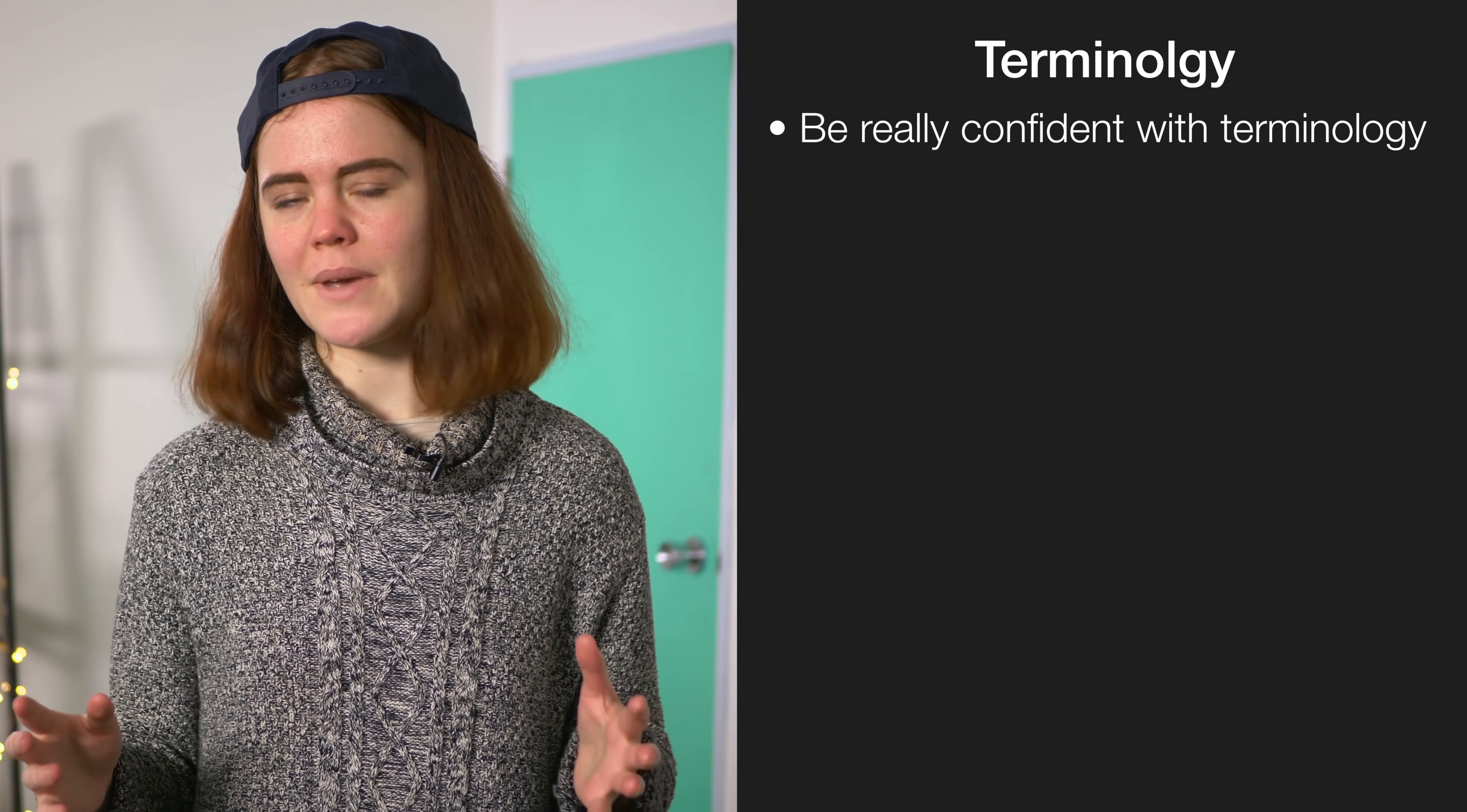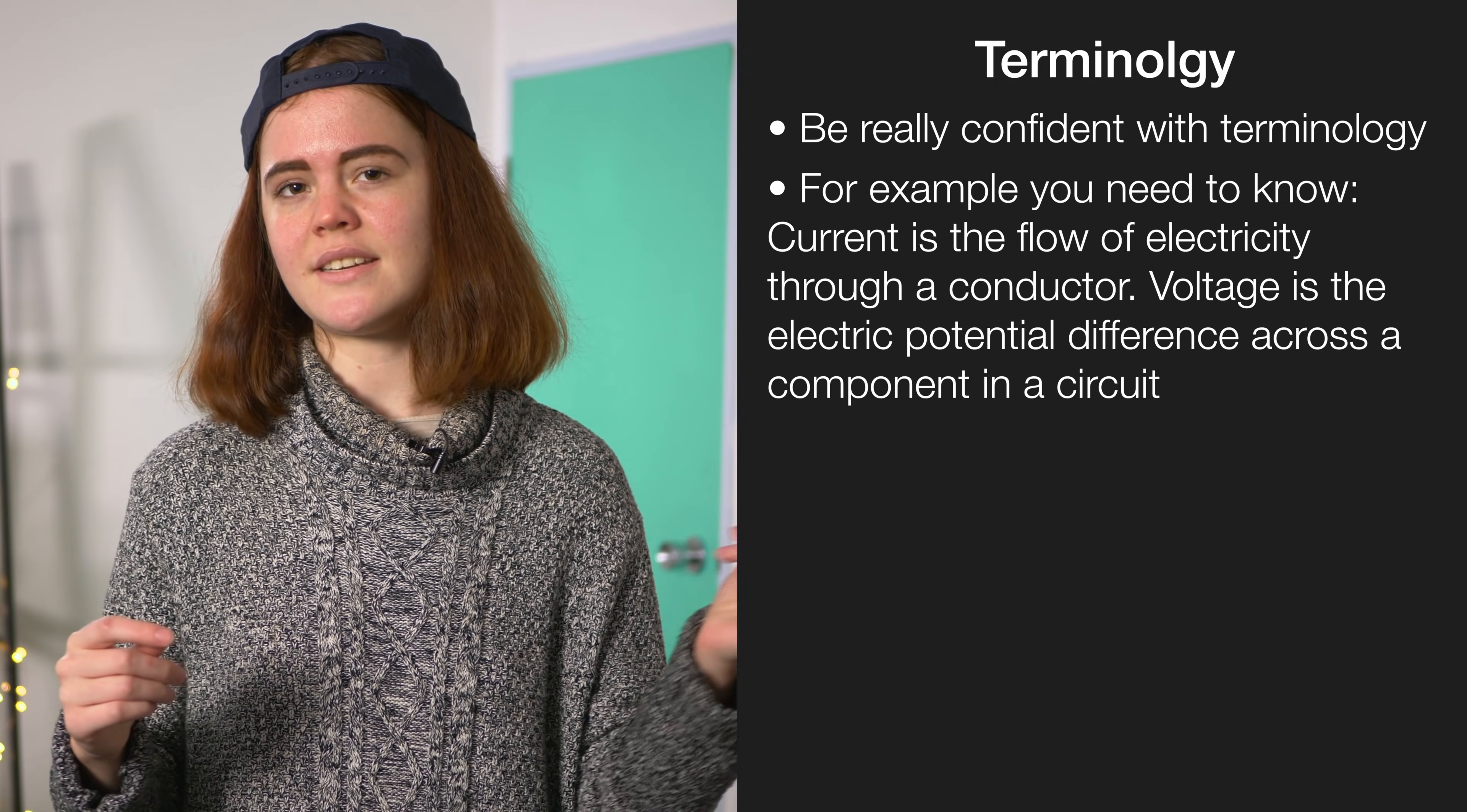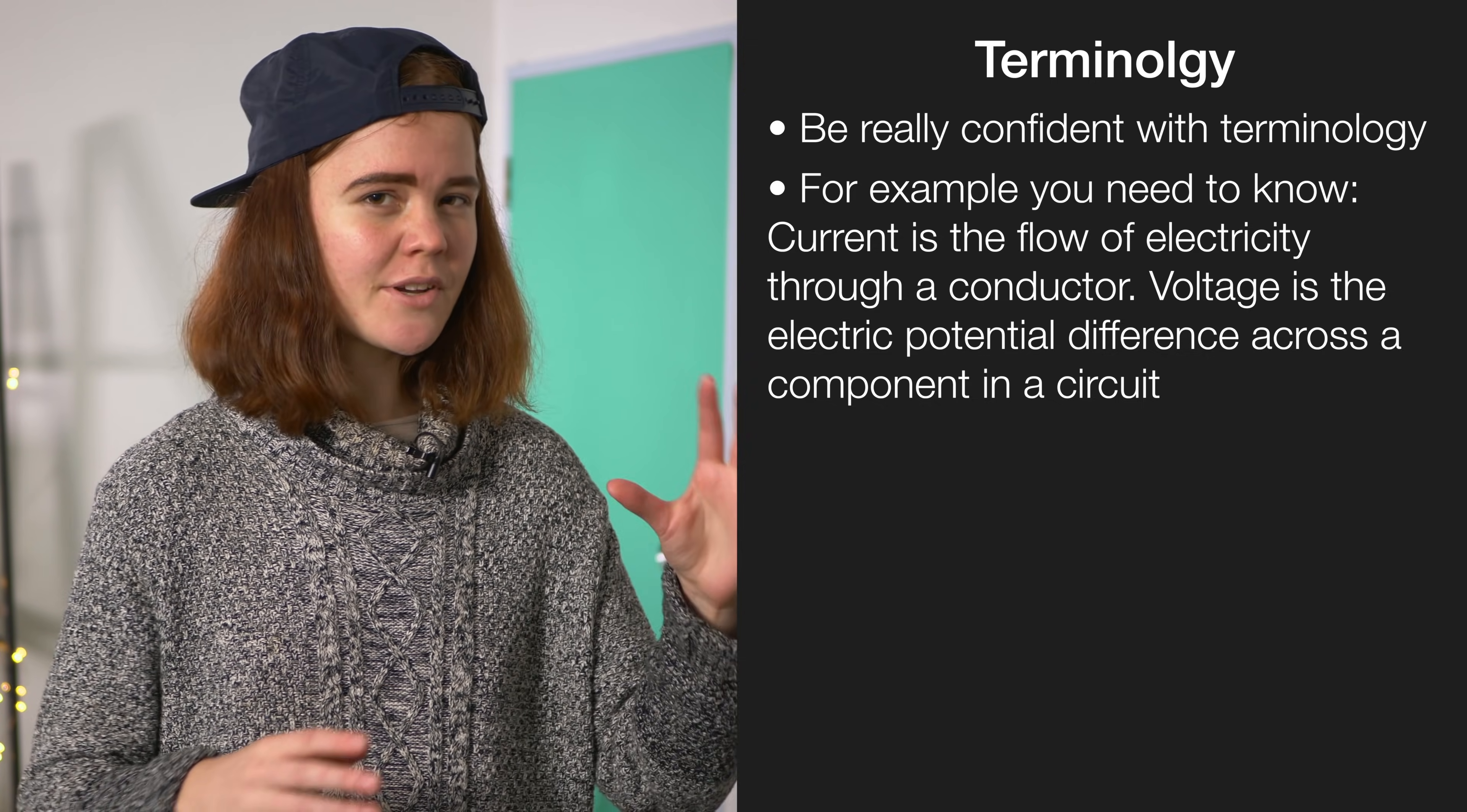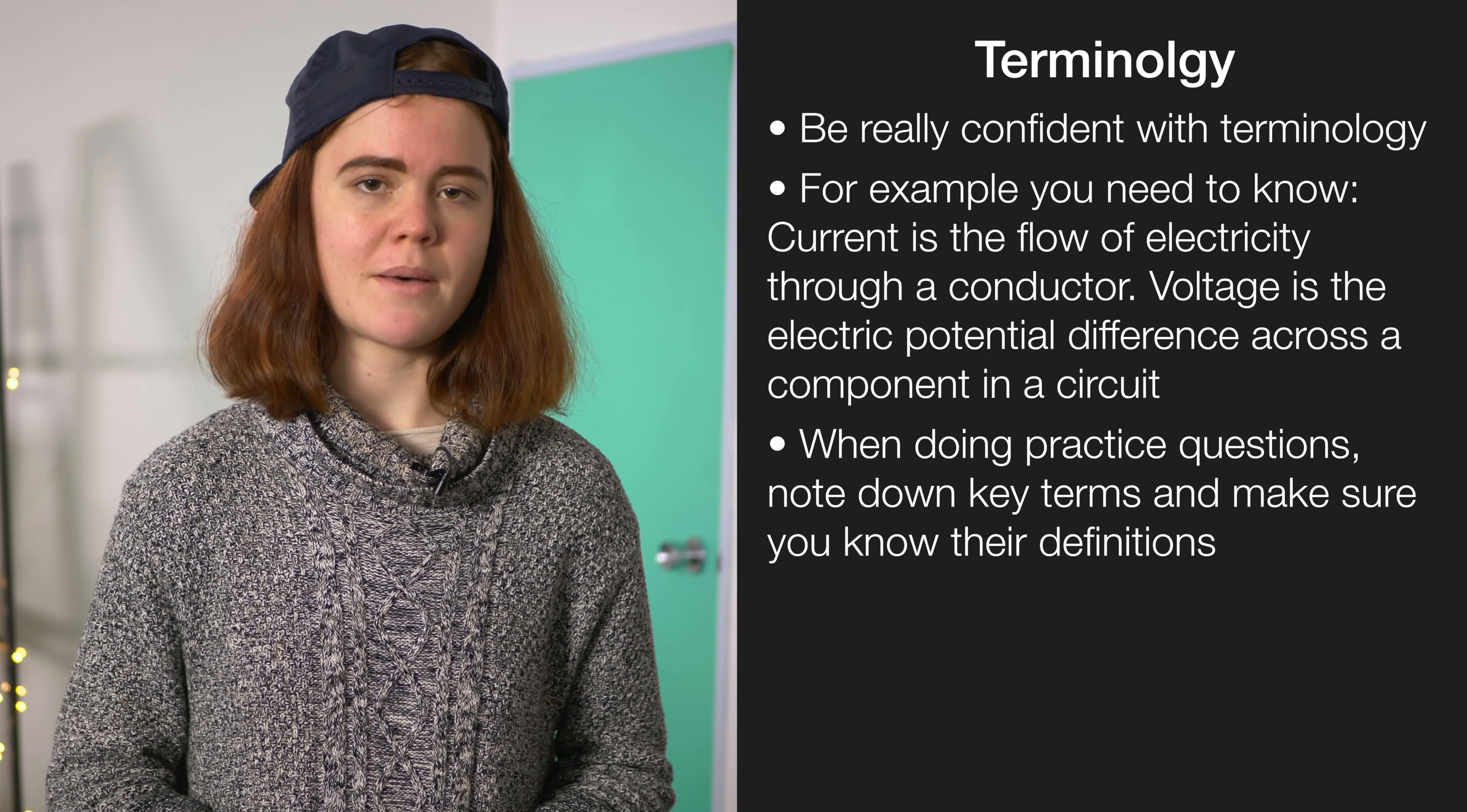You also want to make sure that you're super confident with all the terminology in this exam because you can be thrown some really tricky explanation questions. The best way to make sure you have time to answer these fully is to be really confident with the basics. People often get little bits of terminology mixed up. For example, you need to make sure you can distinguish in your mind that current is the flow of electricity across the conductor and voltage is the potential difference across a component in the circuit. Anytime you're doing a practice question at home, especially if a word is bolded in the question, you should note that down and make sure you know the definition of it so that they're familiar to you when they crop up in the exam.